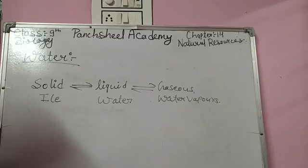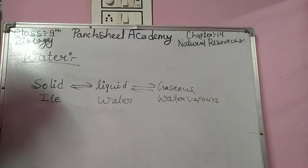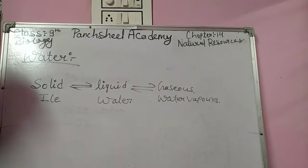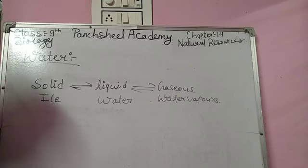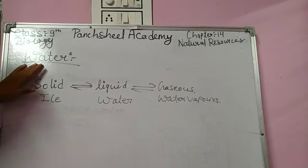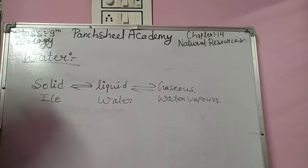Life on Earth is possible because of water, kyunki hamaari life ko maintain karne ke liye water ek essential element hai. Human beings ki bahut saari activities water pe depend karti hain — jaise peene ke liye, utensils, clothes, sewer disposal, irrigation, aur bahut saare other purposes ke liye water ki zaroorat hoti hai.